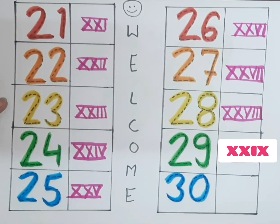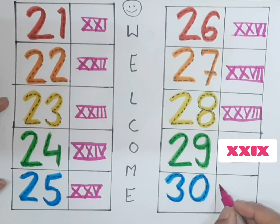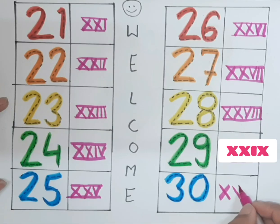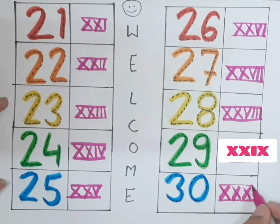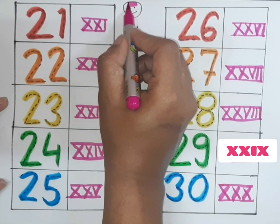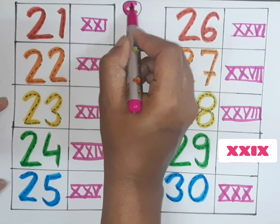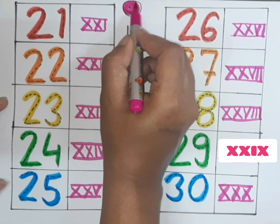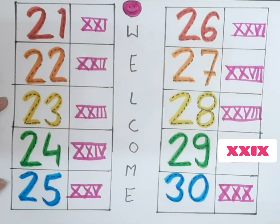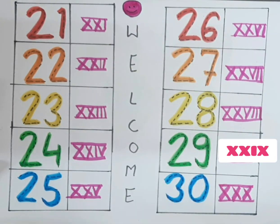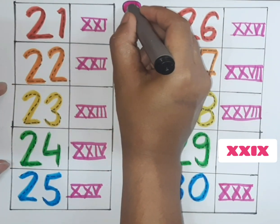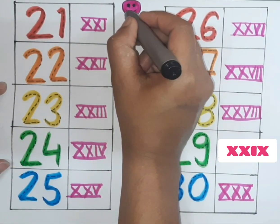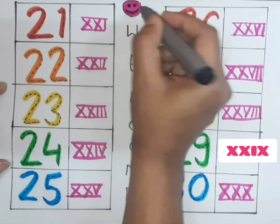This is thirty. Triple X. How to write it? Double X, X.